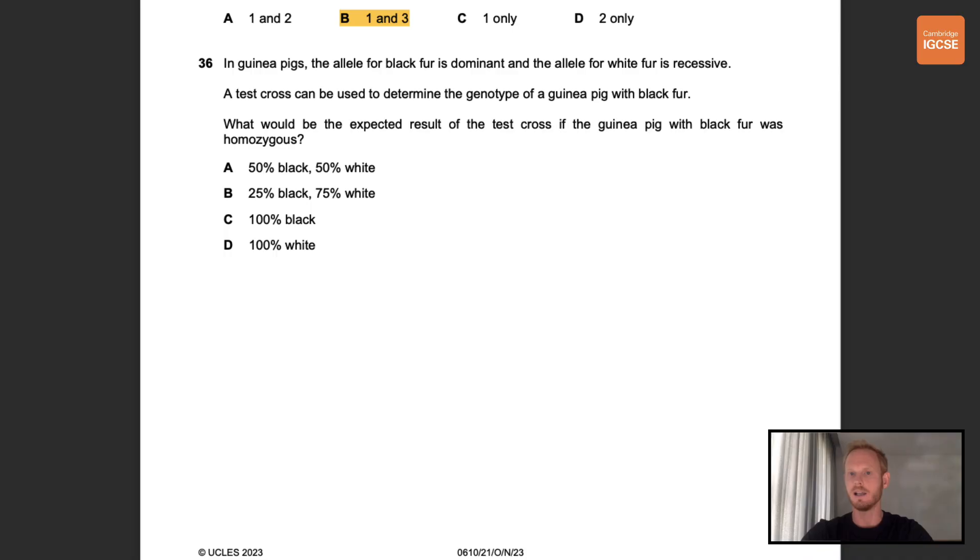Number 36. In guinea pigs the allele for black fur is dominant and the allele for white fur is recessive. A test cross can be used to determine the genotype of a guinea pig with black fur. What would be the expected result of a test cross if the guinea pig with black fur was homozygous? Okay, so because the allele for black fur is dominant we can use a test cross to determine whether the black guinea pig is homozygous or heterozygous. We simply breed the guinea pig with a known homozygous recessive guinea pig. If the black guinea pig is homozygous it will have two dominant alleles meaning 100% of the offspring will be black heterozygotes. So the correct answer is C. I recommend you pause the video again and take your time to study the Punnett square.